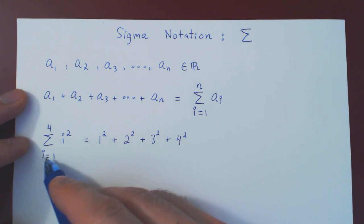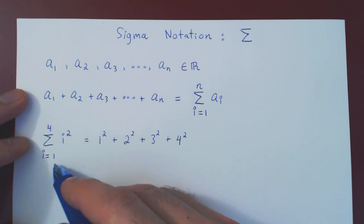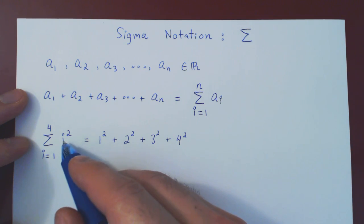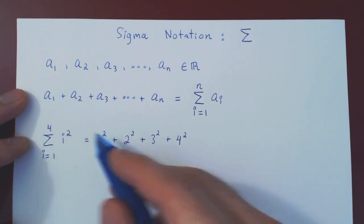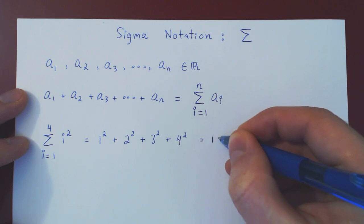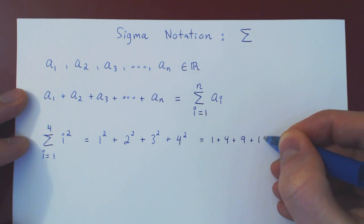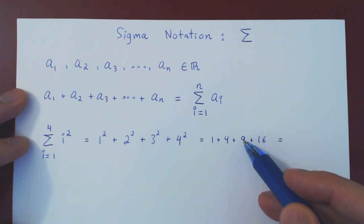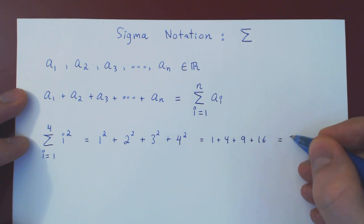So the summation of i² as i goes from 1 to 4 means we add up i² as i ranges from 1 to 4: 1² + 2² + 3² + 4². Evaluating: that's 1 + 4 + 9 + 16 = 30.